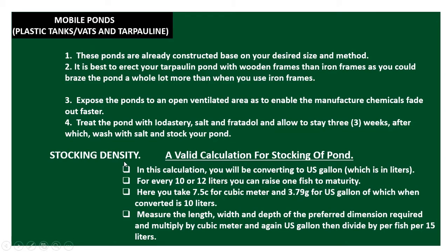Stocking density — a valid calculation for stocking of ponds. In this calculation you will be converting to US gallons, which is in liters. For every 10 to 12 liters you can raise one fish to maturity. Here you take 7.5 centiliters per cubic meter and 3.79 for US gallon, which when converted is 10 liters.